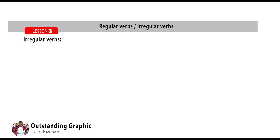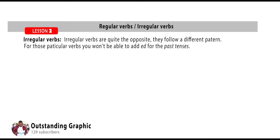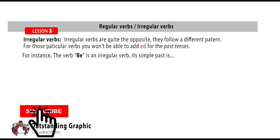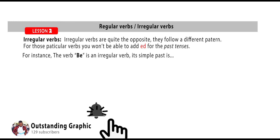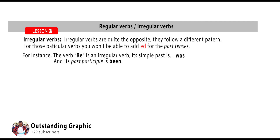Irregular verbs, on the other hand, are quite the opposite — those verbs follow a different pattern, meaning you cannot simply add '-ed' for the past tenses. To know when a verb is irregular, you'll have to study a list of irregular verbs, which I'll also put in the description below. For instance, the verb 'be' falls into the category of irregular verbs, which means its simple past is 'was' and its past participle is 'been.'